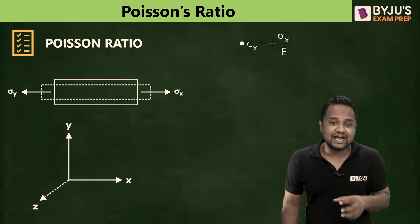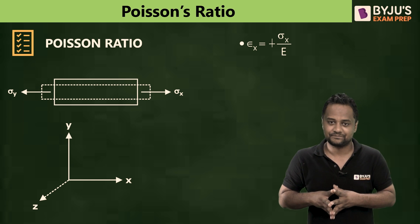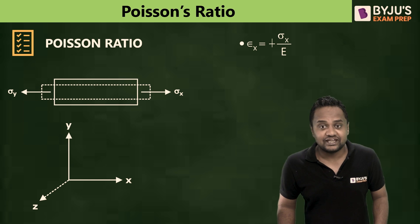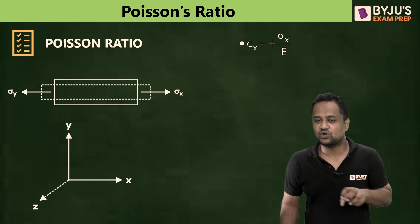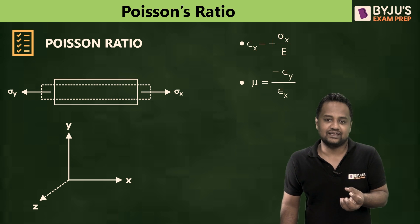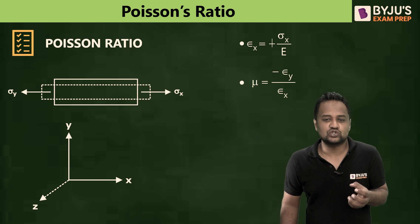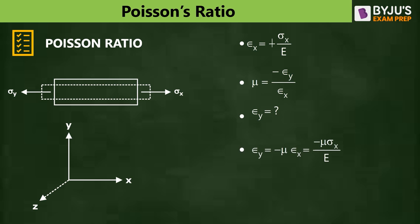For unidirectional loading, Hooke's law is valid. The strain in the x-direction due to stress σ_x is σ_x / E. Now, what will be the strain in y and z directions? Since Poisson's ratio μ = −ε_y / ε_x = −ε_z / ε_x, both ε_y and ε_z will be the same because y and z are both 90 degrees to x. Therefore, strain in y direction = −μ · ε_x = −μ · σ_x / E, and similarly strain in z direction = −μ · σ_x / E.